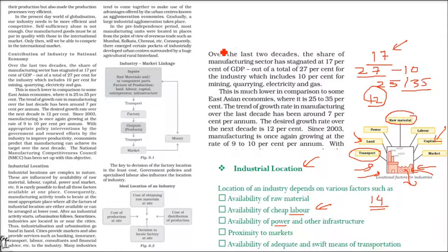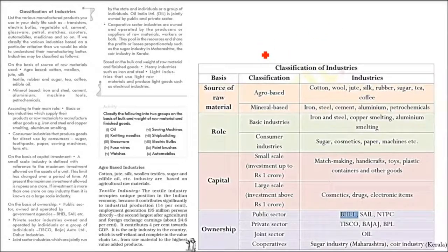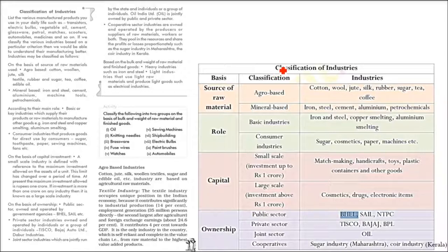In the pre-independence period, most industries were set up in Mumbai, Kolkata, and Chennai because they were near ports. These cities are now major metropolises because industrial development was the key factor there. When talking about industries, it becomes important to classify them based on where the raw material comes from, the role of the industry, the capital invested, and who has ownership.